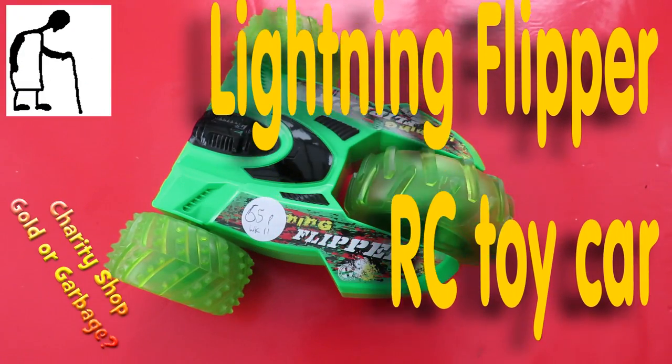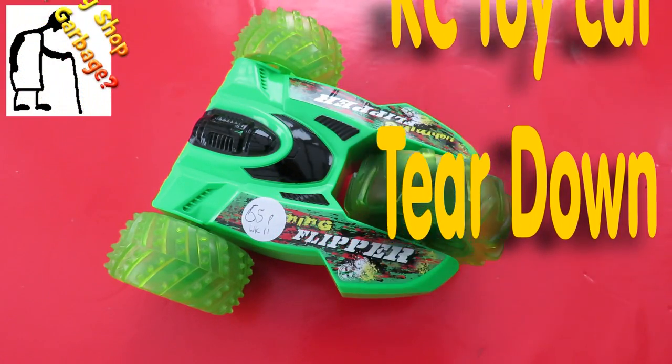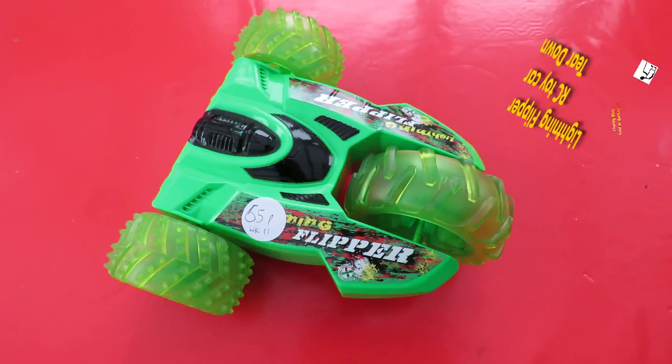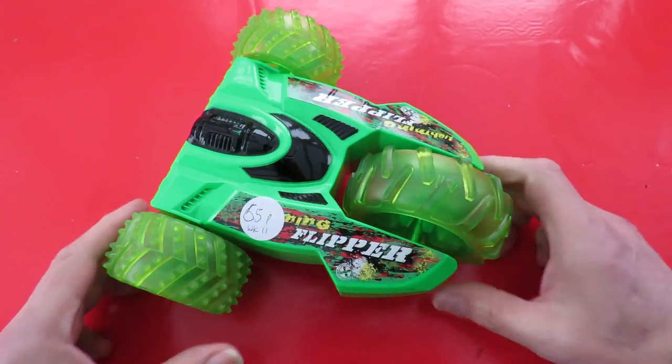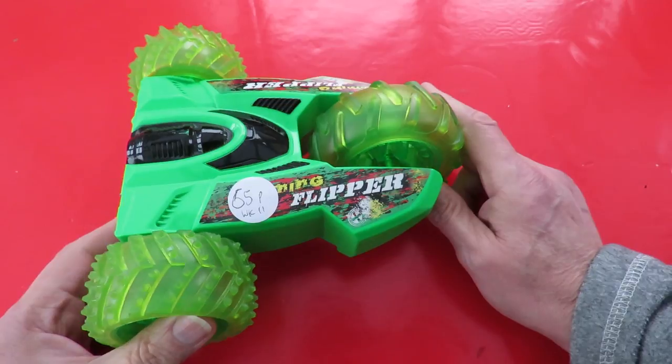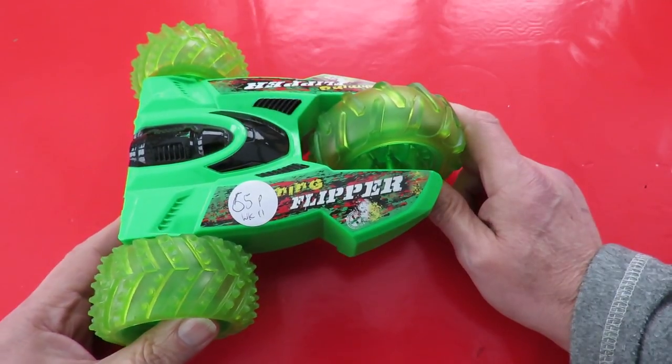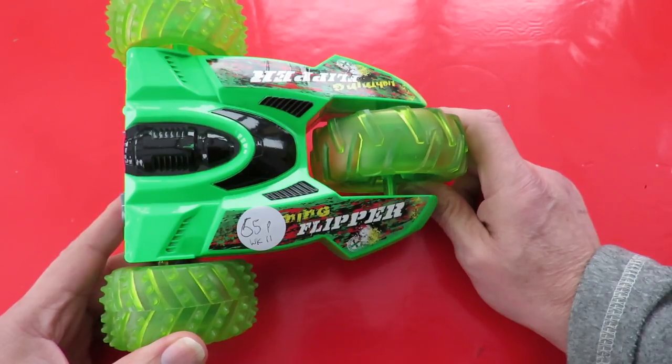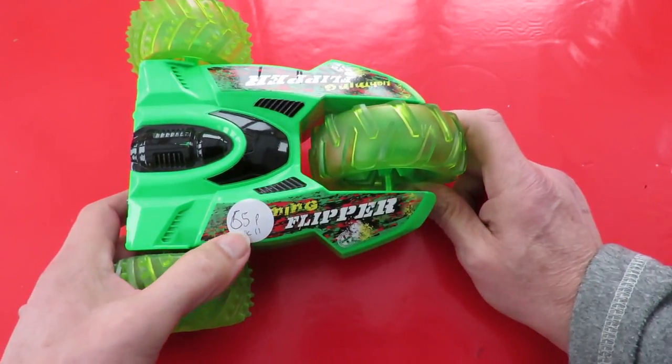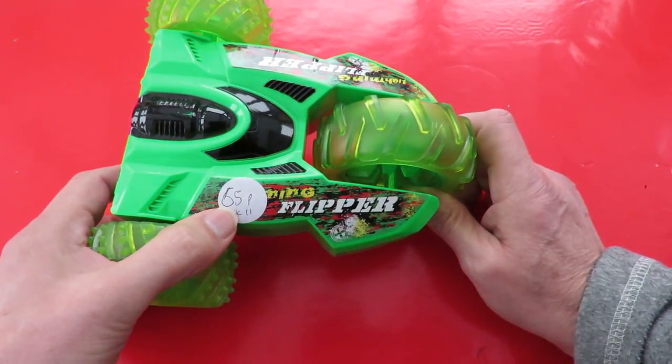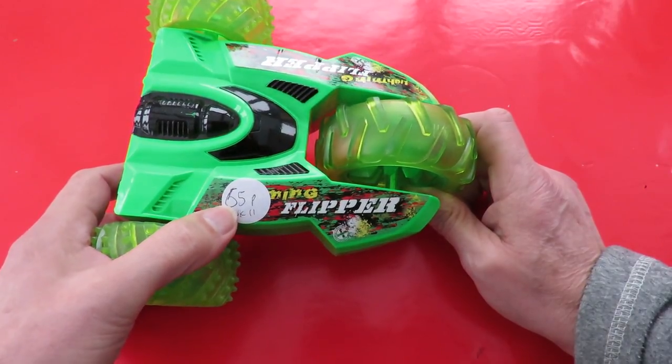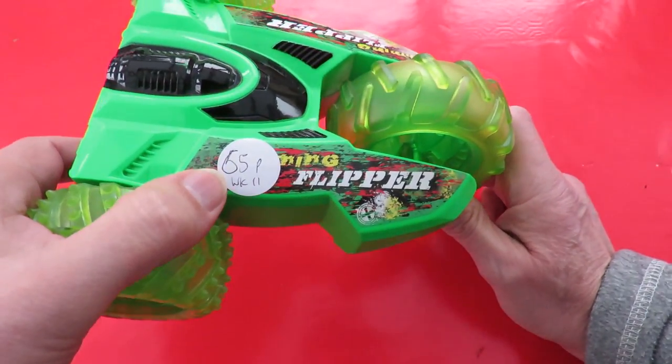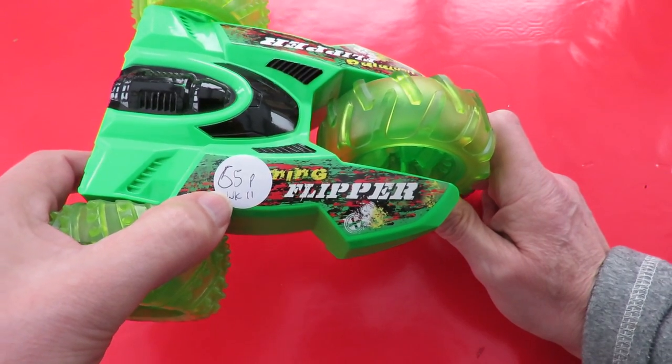Hi guys, Charity Shop Gold or Garbage. Just the one item here. Picked this up in Kingswood in Bristol, Salvation Army I think. That looks like 65 pence to me but they decided it was 55 pence. I wasn't going to argue, I was quite happy with that.